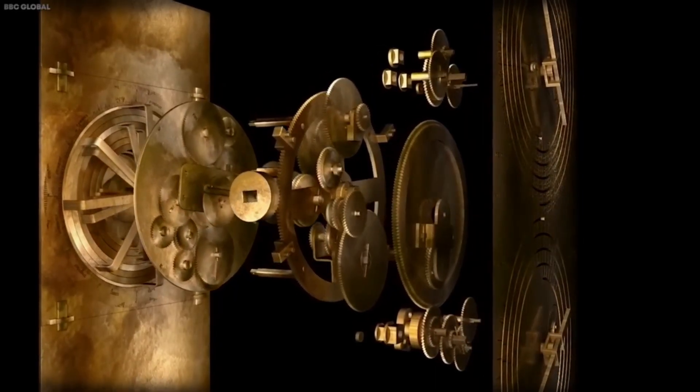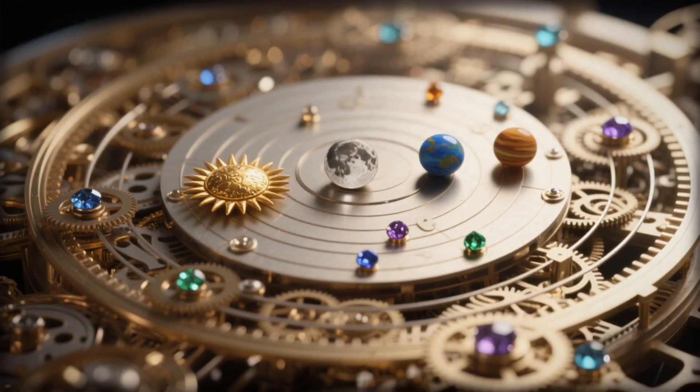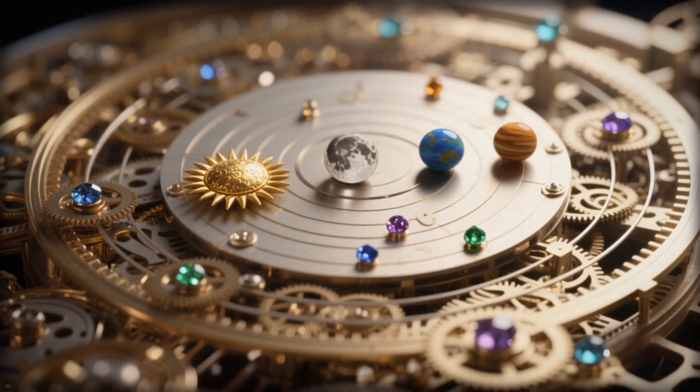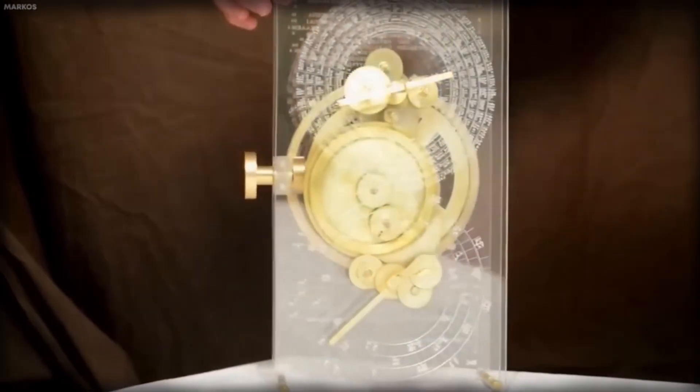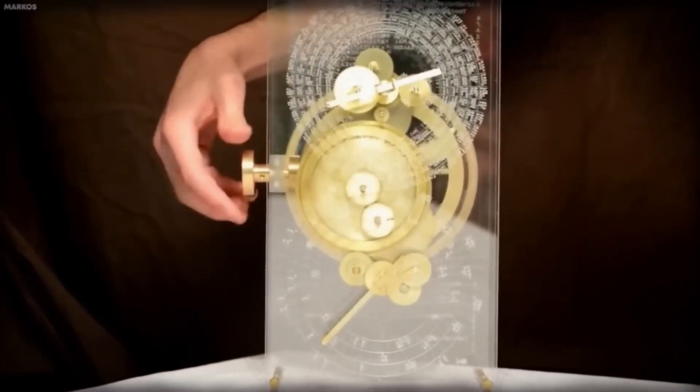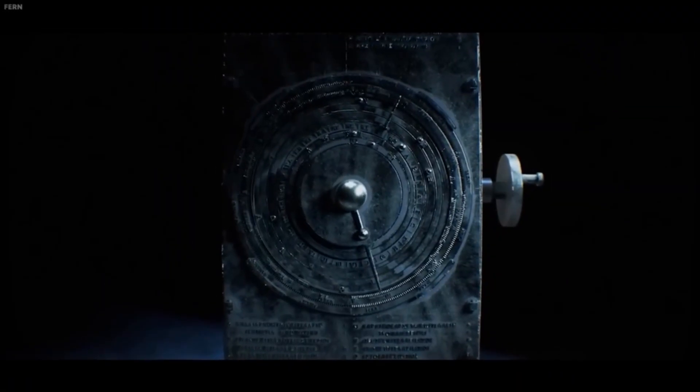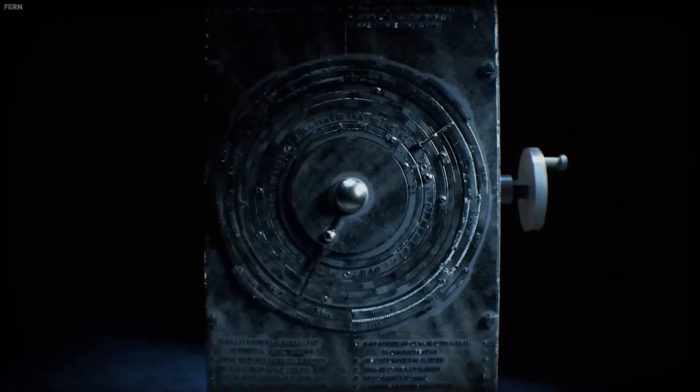Layer by layer, the gears took shape. Small epicyclic systems to mimic planetary speed changes. Pin and slot mechanisms to reproduce retrograde motion. It was an ancient form of orbital physics, hidden in bronze. When the model was complete, something extraordinary appeared.